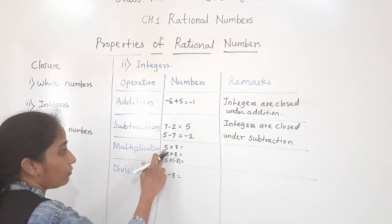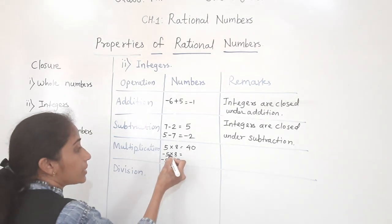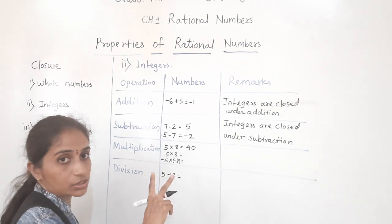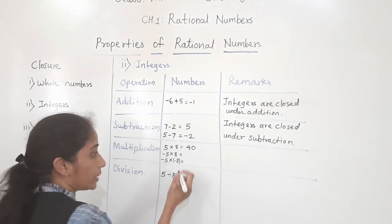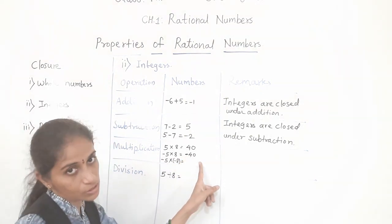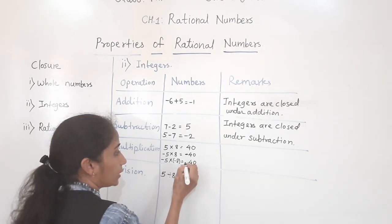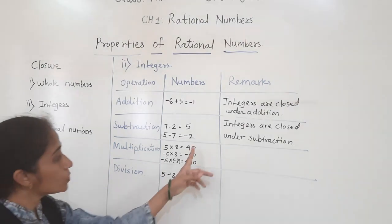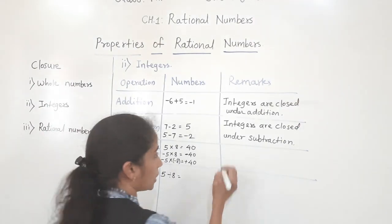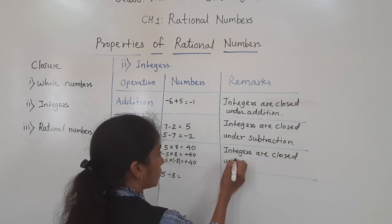Now multiplication. Five times eight equals 40 — this is a positive integer. Minus 5 times 8: we multiply as whole numbers and give a minus sign, so we get minus 40 — this is also an integer. Minus 5 times minus 8: when two negative integers are multiplied, the product is positive, so we get plus 40 — also an integer. Integers are closed under multiplication.